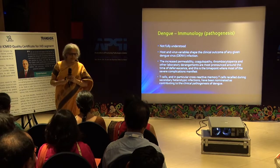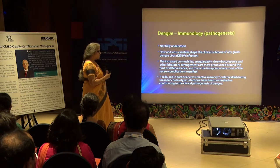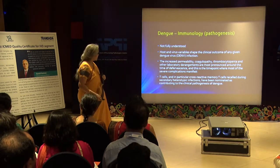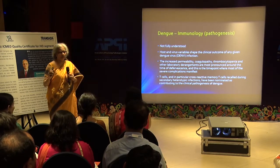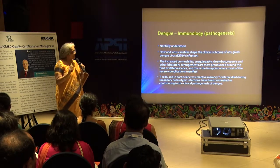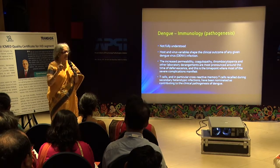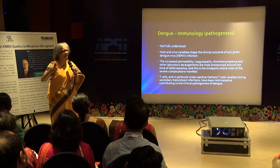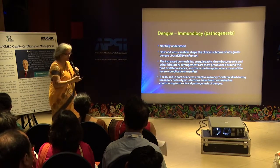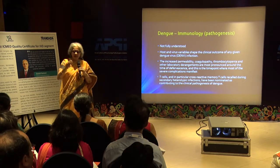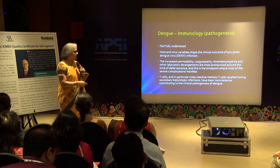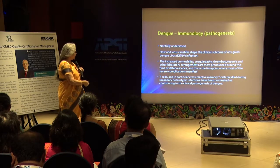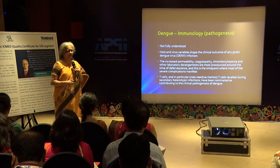Let's understand a little bit about immunology — just those things I found relevant. It's not fully understood — that's the basic thing. There must be variables in the host and in the virus because of which different patients present differently: some only with fever, some asymptomatic, some with hemorrhagic fever, some with dengue shock syndrome. What finally goes wrong relates to the coagulation pathways — increased permeability, coagulopathy, thrombocytopenia, and other laboratory derangements.